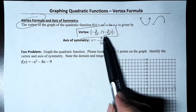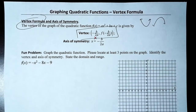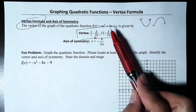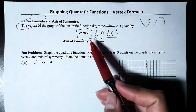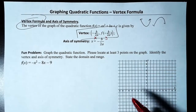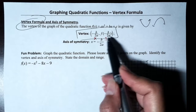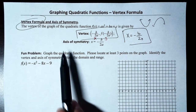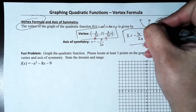The vertex formula: to find the vertex, we find negative b over 2a, comma, f of negative b over 2a. To find the x-value, you find negative b over 2a, where b and a come from the standard form ax² + bx + c. I just remember x equals negative b over 2a. The axis of symmetry is the vertical line that goes through the vertex.